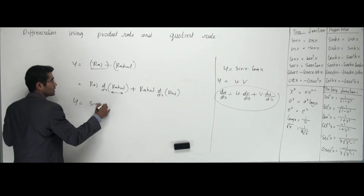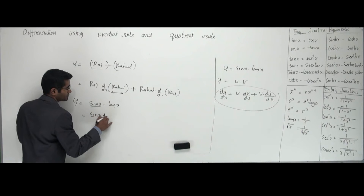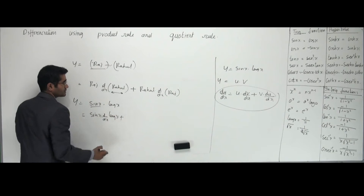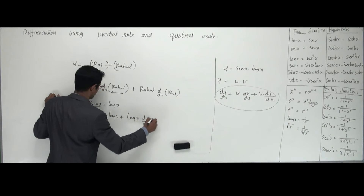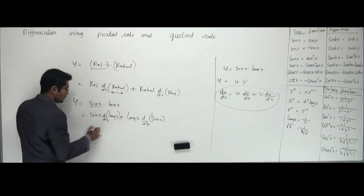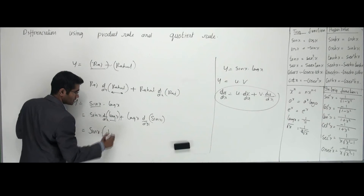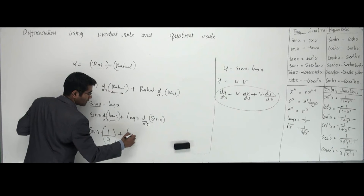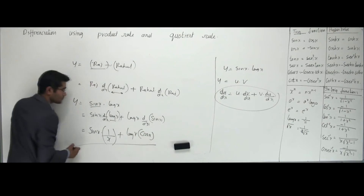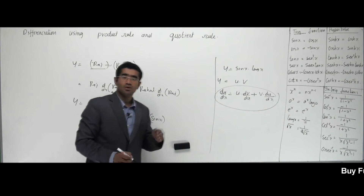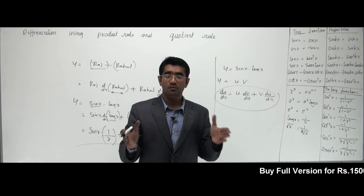Applying this to y = sin x · log x: keep sin x and differentiate log x (which is 1/x), plus keep log x and differentiate sin x (which is cos x). Notice that you're differentiating only one single function at a time — that's the essence of the product rule.